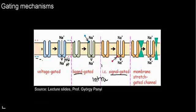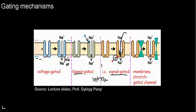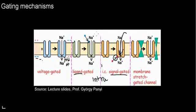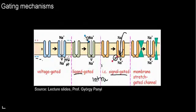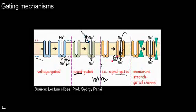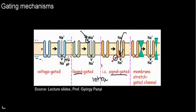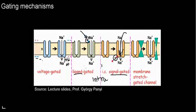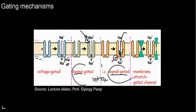Once that intracellular molecule binds to the binding site on this ion channel, that's pressing the button — the channel is going to conduct and open. Similarly, you can have a molecule coming from the extracellular side and docking at a binding site there. That's the difference between ligand-gated from outside versus secondary messenger-gated from inside.